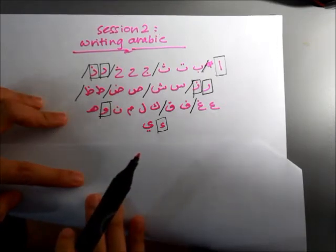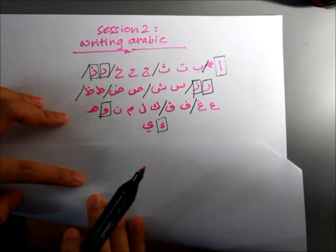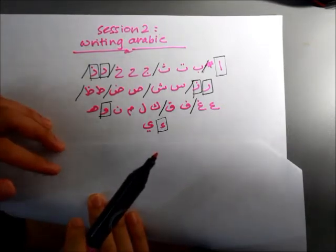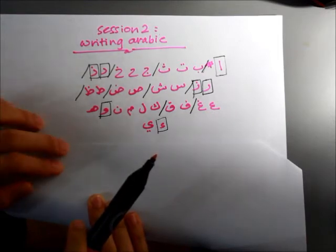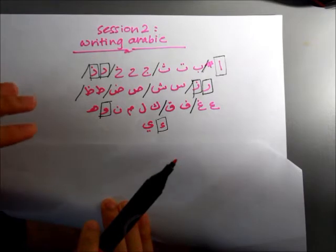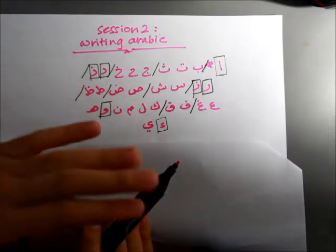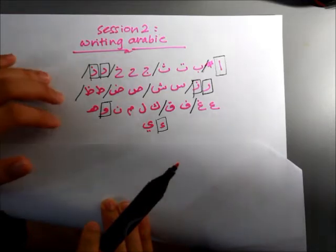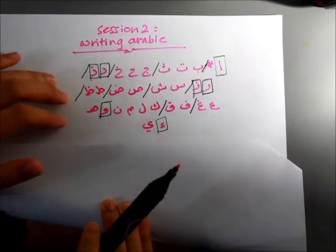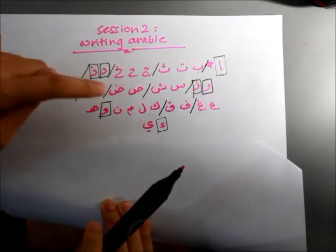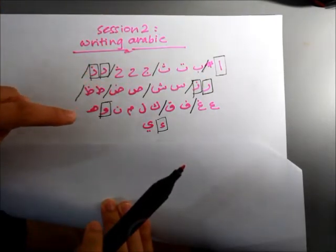Before I go into that, I'd like to go over this quite quickly. Basically, out of all these 29 letters, most of them can be joined together either before or after. But there are some specific letters that have special rules applied to them — the ones I've already highlighted.